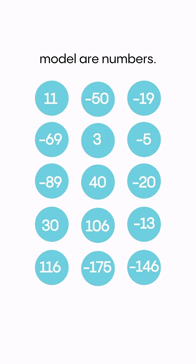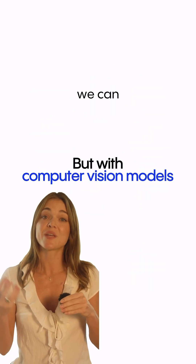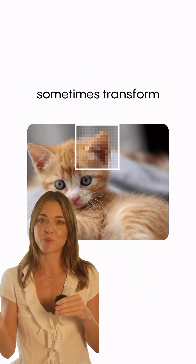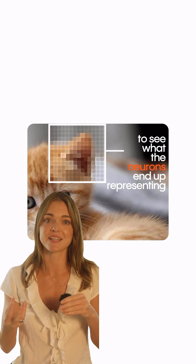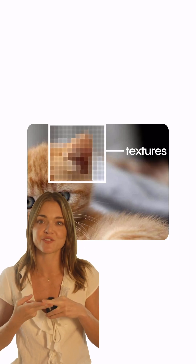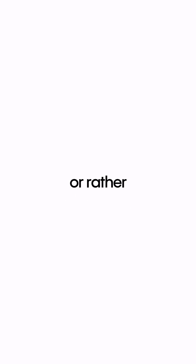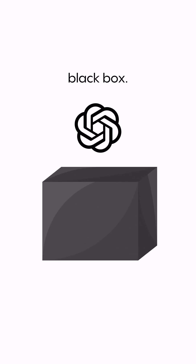Now let's go back to the features. Recall that all the information in the model are numbers. But with computer vision models, we can sometimes transform those numbers to see what the neurons end up representing — finding shapes or textures the model uses to make its decisions. But in language models, turning those numbers into features we can understand, called model interpretability, is harder. This creates the well-known problem where AI, or rather large language models like ChatGPT, are a black box.